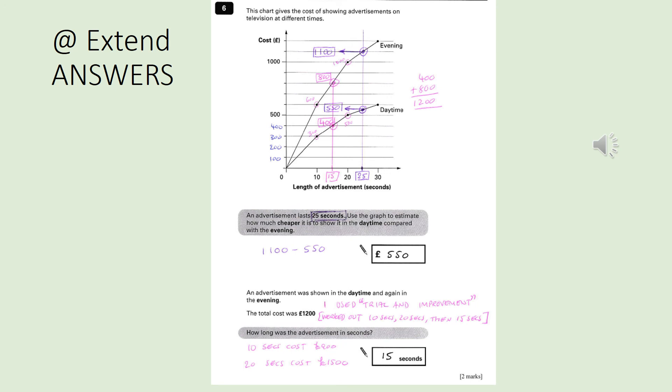So then you could have a look at 20 seconds. It would cost 500 pounds in the daytime and 1,000 pounds in the evening. So if you add them together, that's 1,500, which is too much money. So if you look halfway between 10 and 20 seconds, which is 15 seconds, it would cost 400 pounds in the daytime, 800 pounds in the evening. Add those together and you get your 1,200 pounds. So the answer is 15 seconds. Well done if you got that because that was a real challenge. I hope you enjoyed today's lesson and I will see you again after half term.